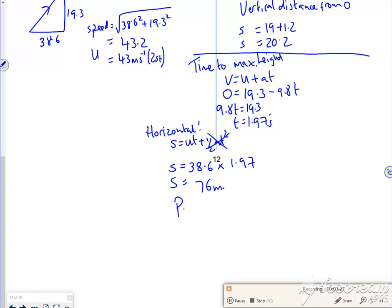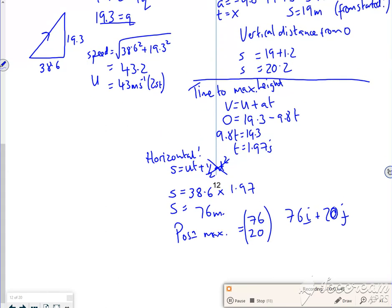So, its position at the max height is 76 across, and 20, well, 20 to 2 figures, 20 up, or 76I plus 20J. So you're kind of happy with this one, I had to find the time to get to the max height, then I could work out the distance for it. There.